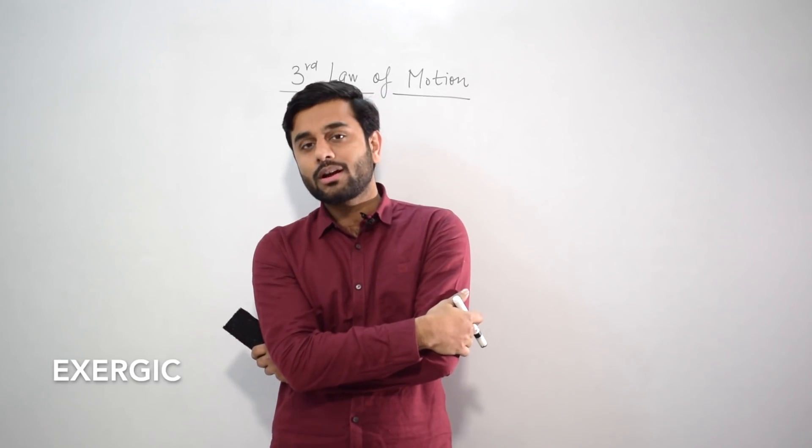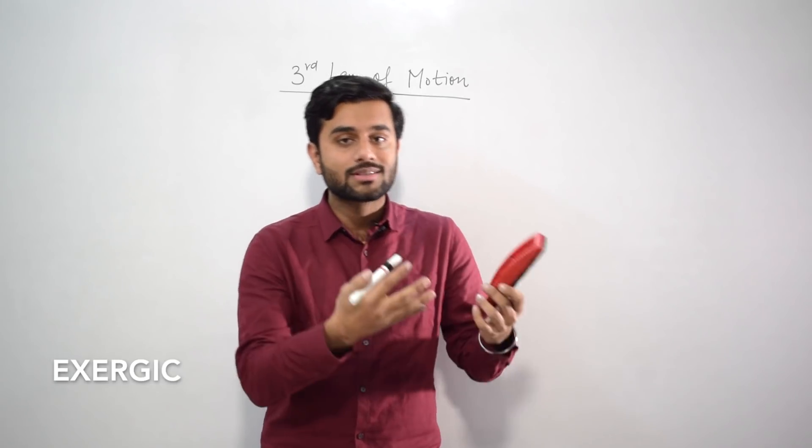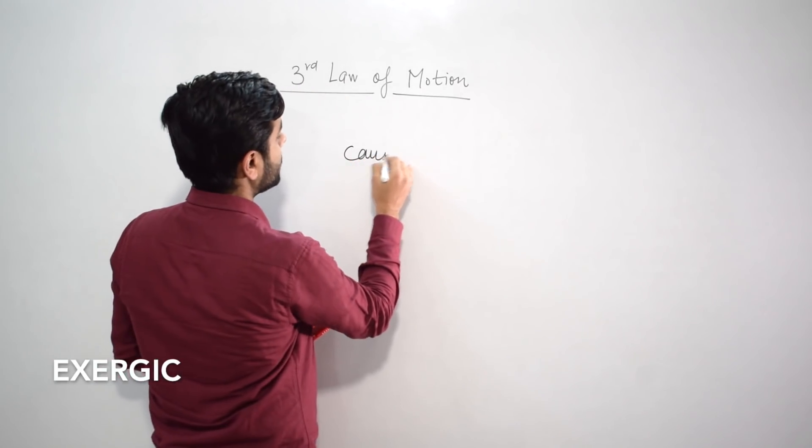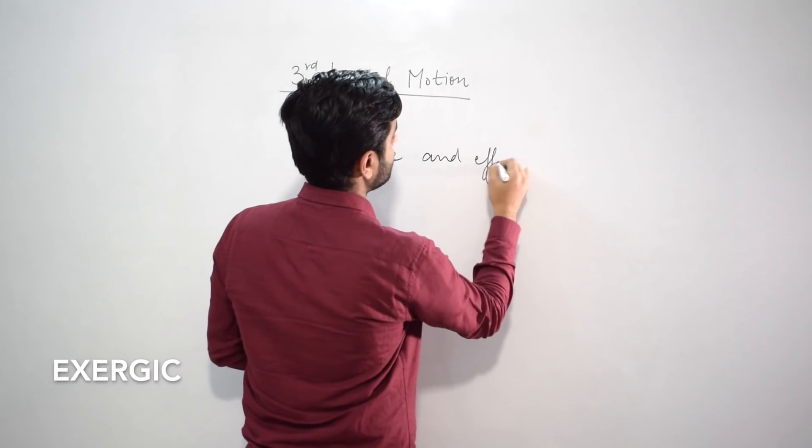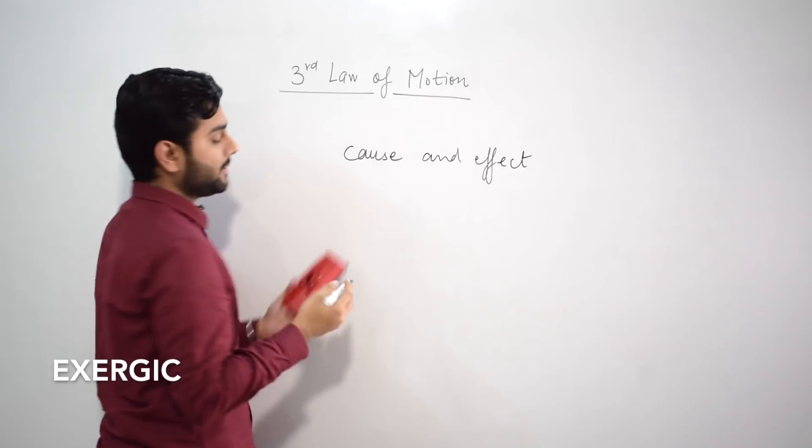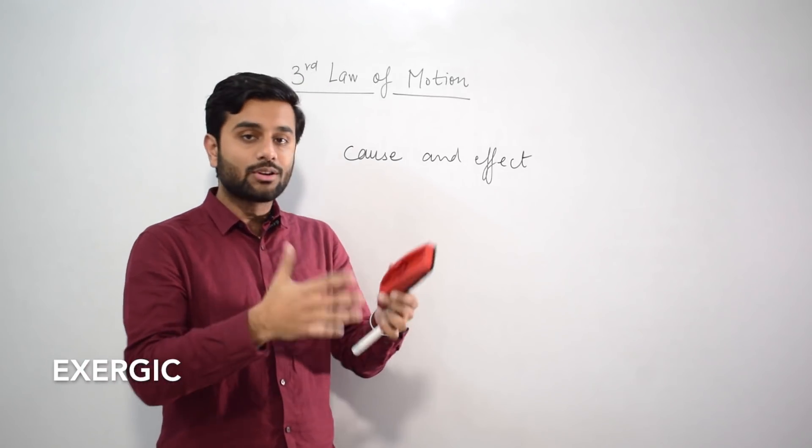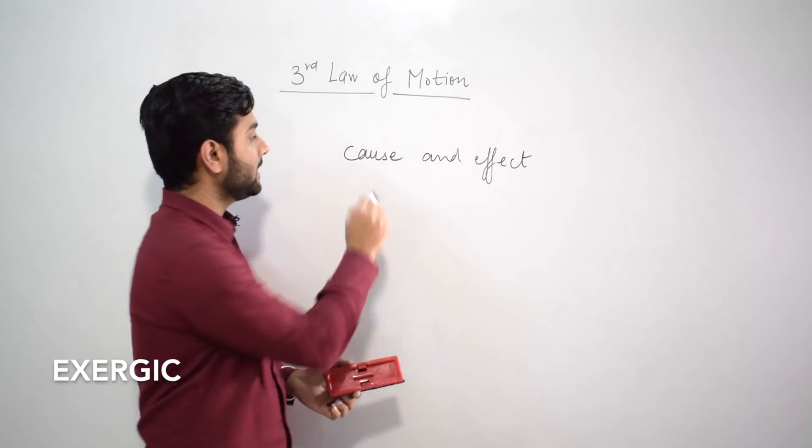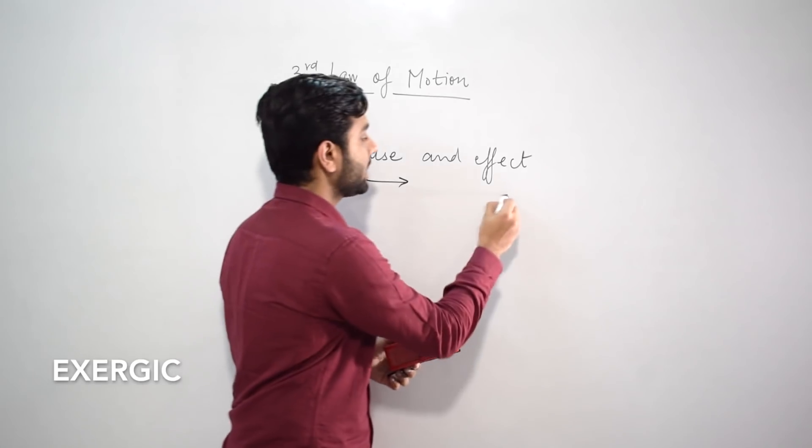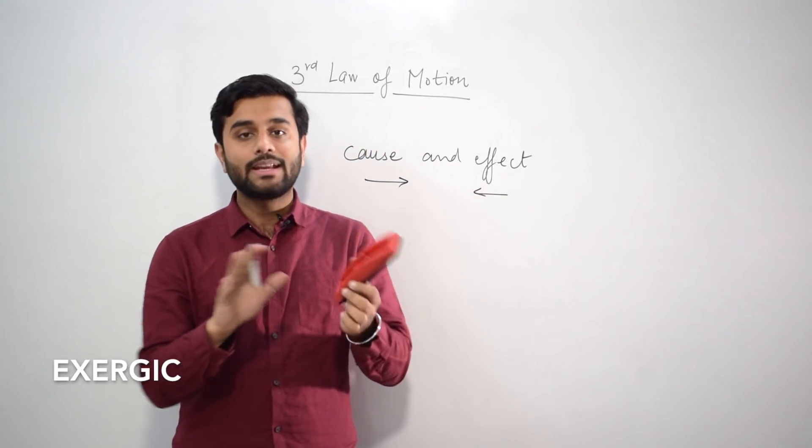When you say every action has equal and opposite reaction, it gives you a wrong feeling that you're having a cause and effect relationship. It means that action is causing something and as an effect of action, reaction is happening. The statement gives you a wrong feeling that action is the cause and reaction is the effect. It's not true. It's totally incorrect.